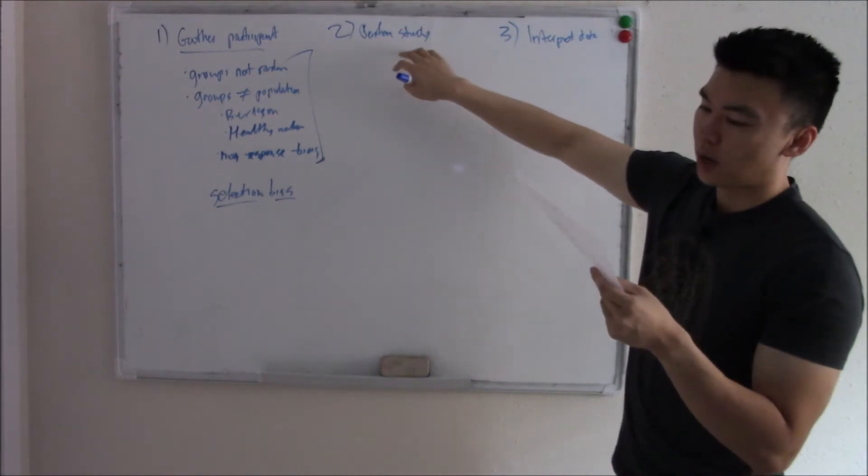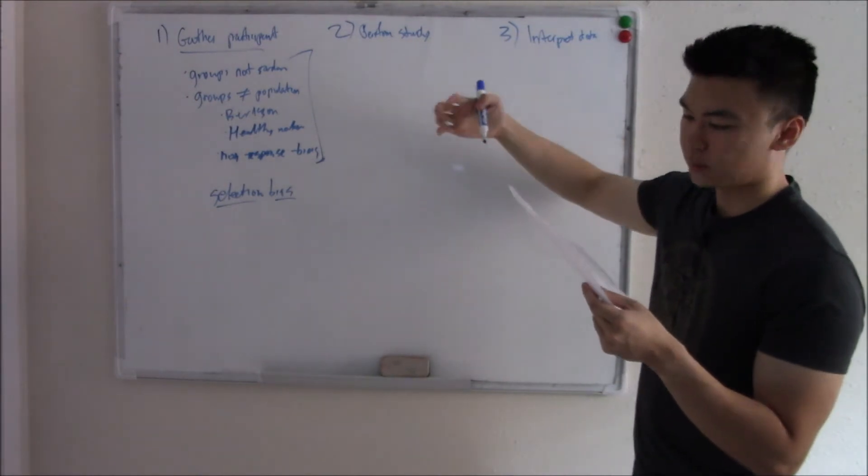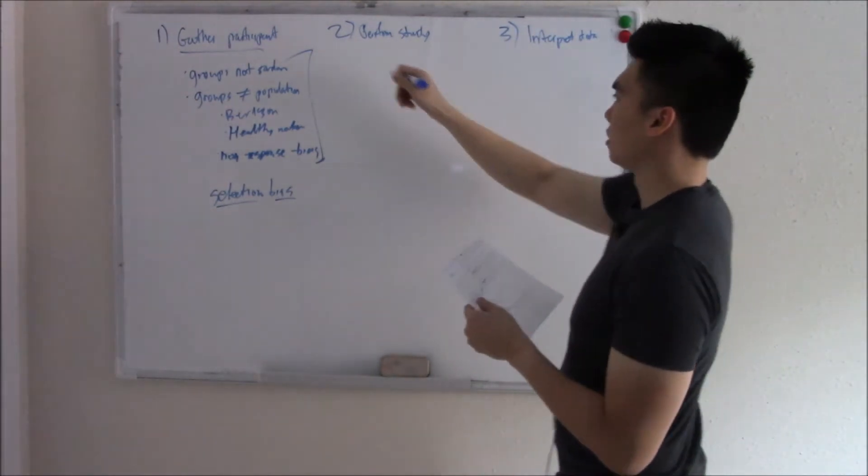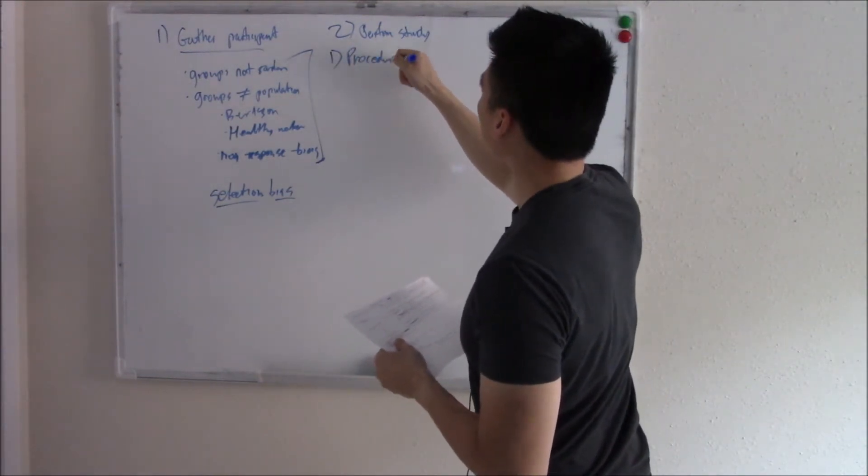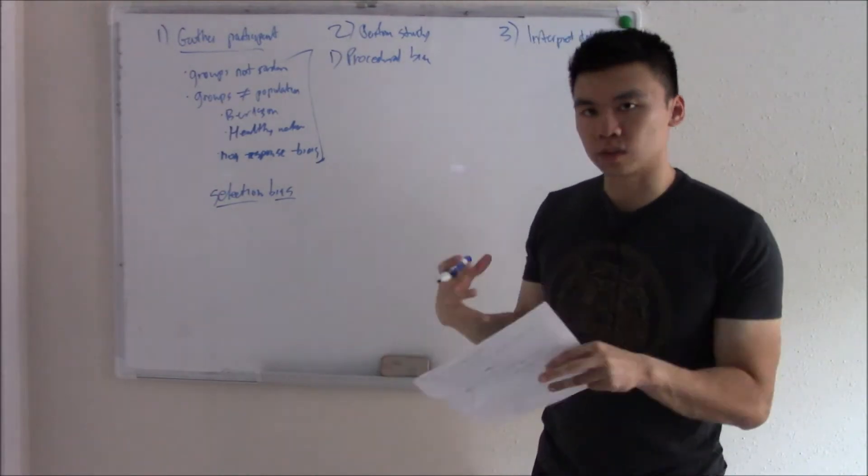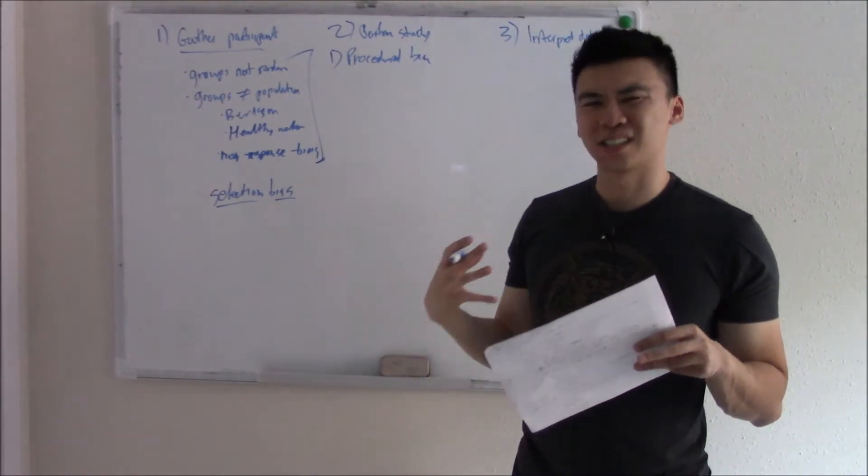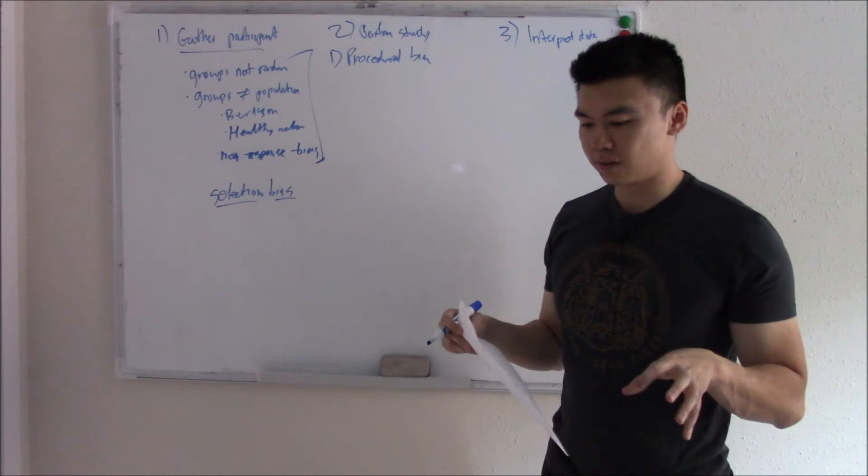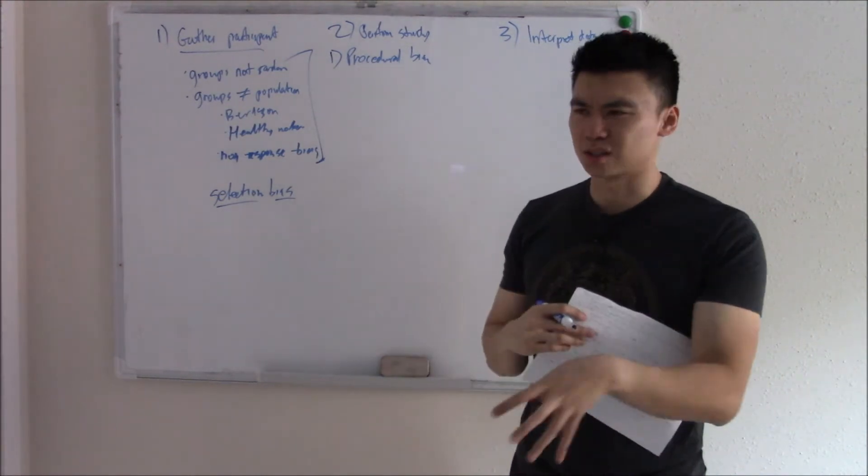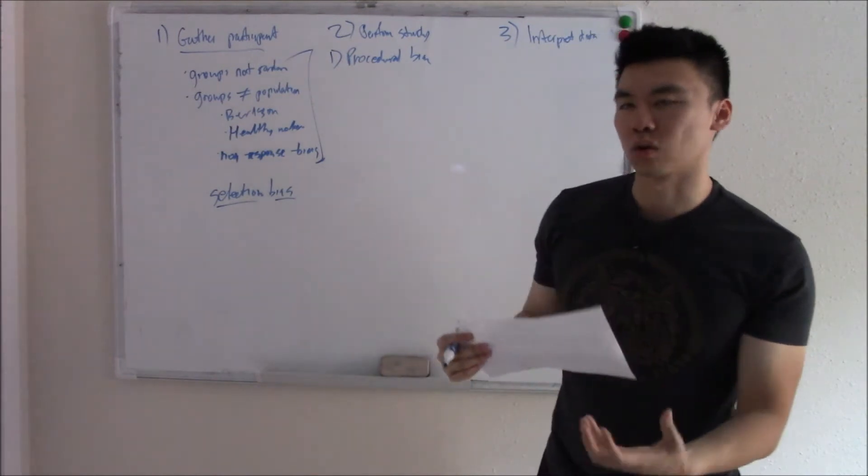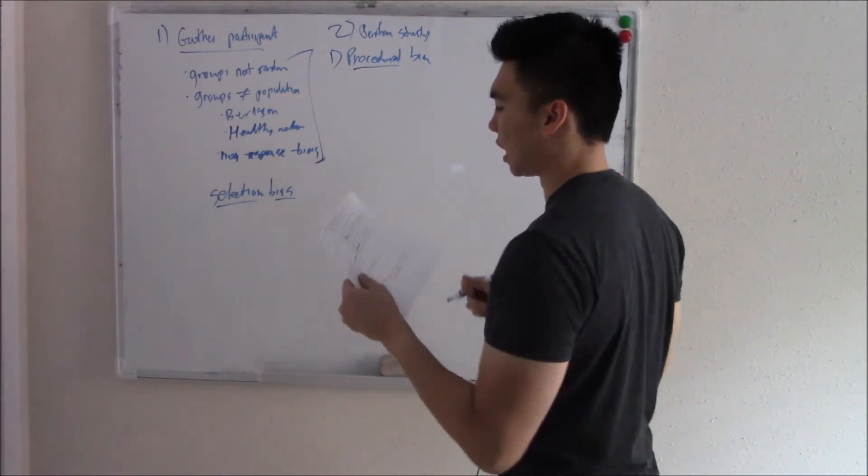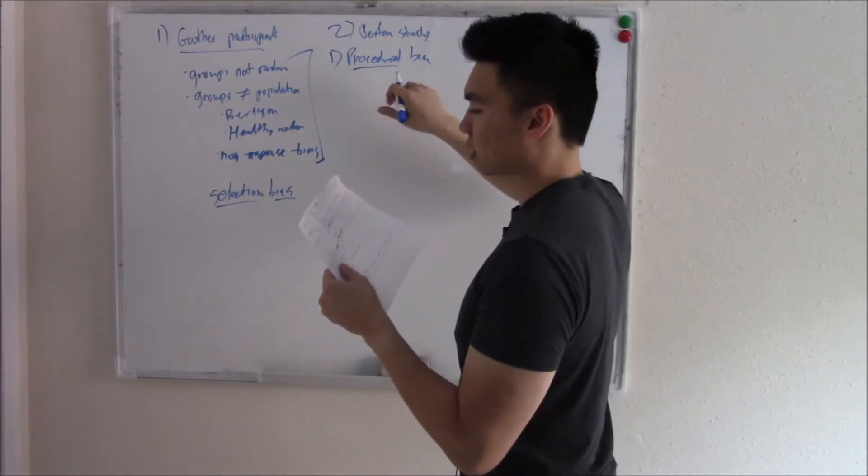Let's move on to what happens if you perform the study and you mess up. There are a couple ways you can mess up. Easiest one to conceptually understand is procedural bias. This is when you perform the study in a skewed way. Maybe you give patients the wrong dose of drug or something, where you're performing the study poorly. Procedural bias.